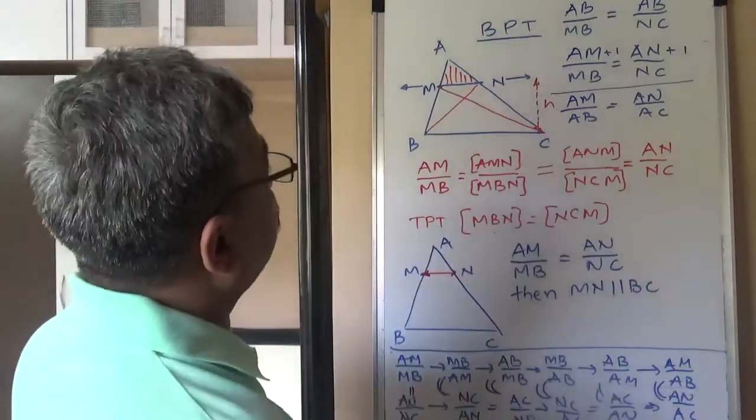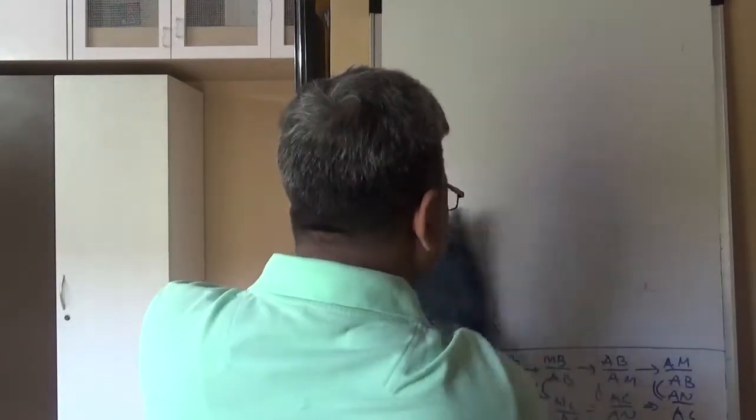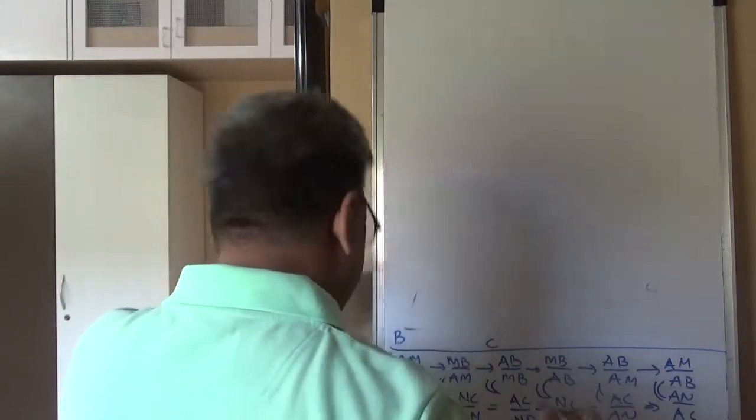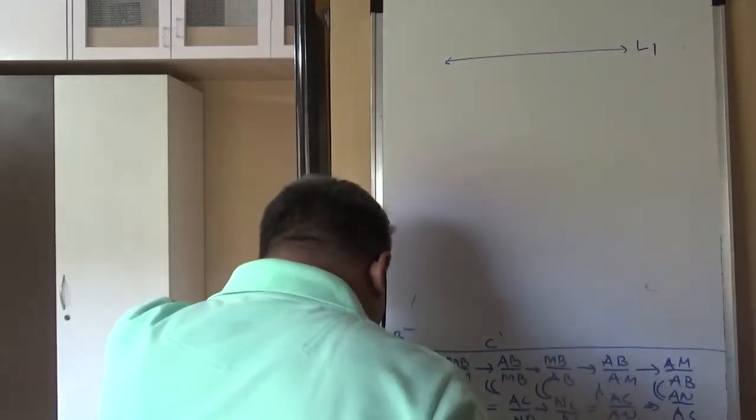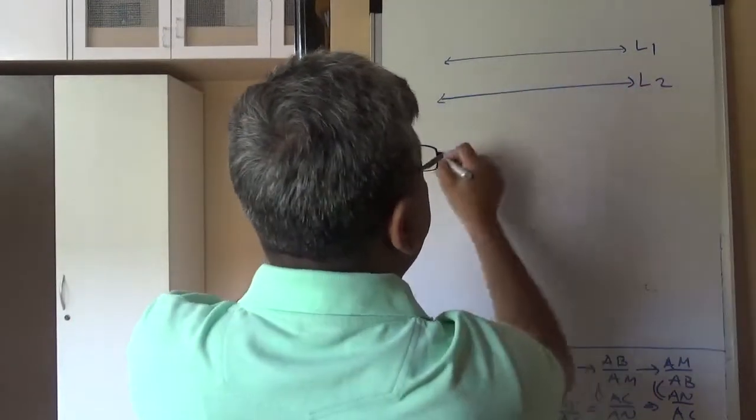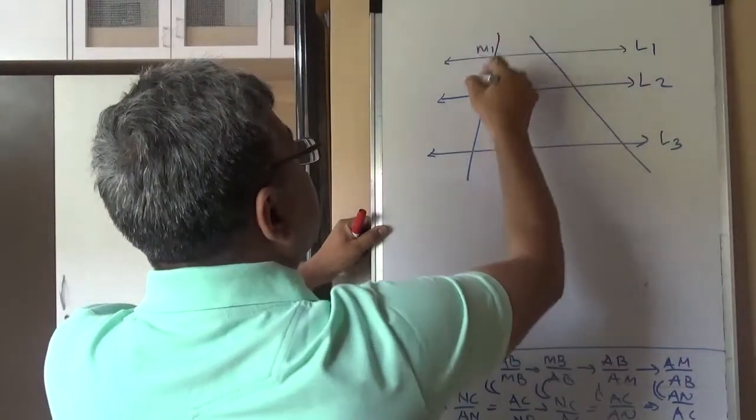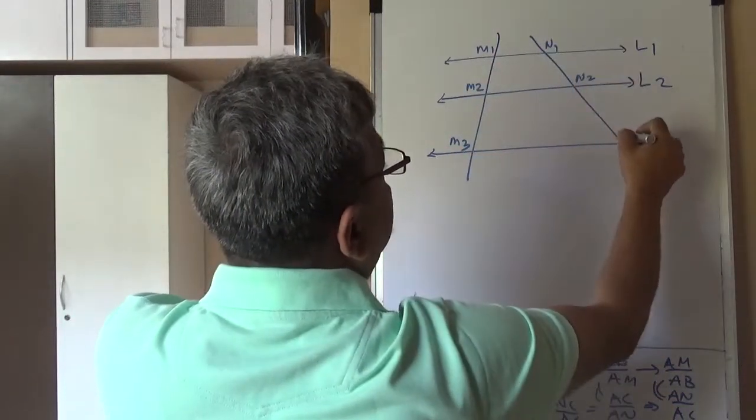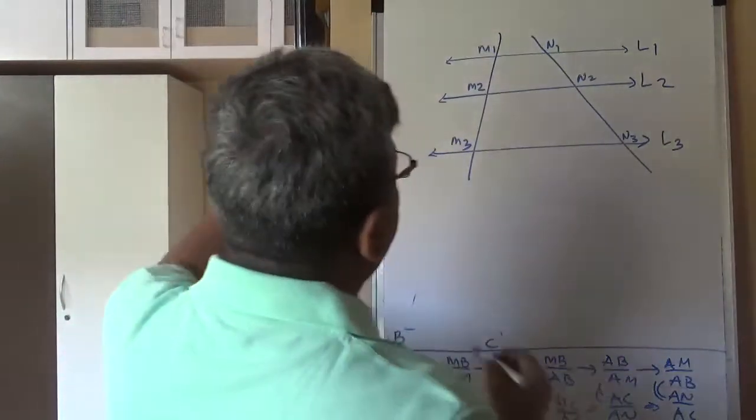The third result in today's lecture is, suppose we have three parallel lines. Suppose we have three parallel lines, L1, L2, and L3. And they are intercepted by two transversals.